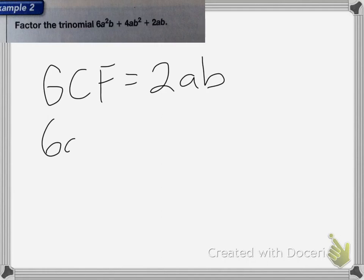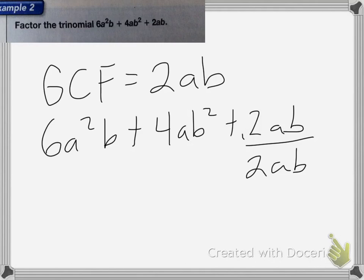So I'm going to take 6a squared b plus 4ab squared plus 2ab, and we're going to divide each of those by 2ab, because I can factor that out of each equation.